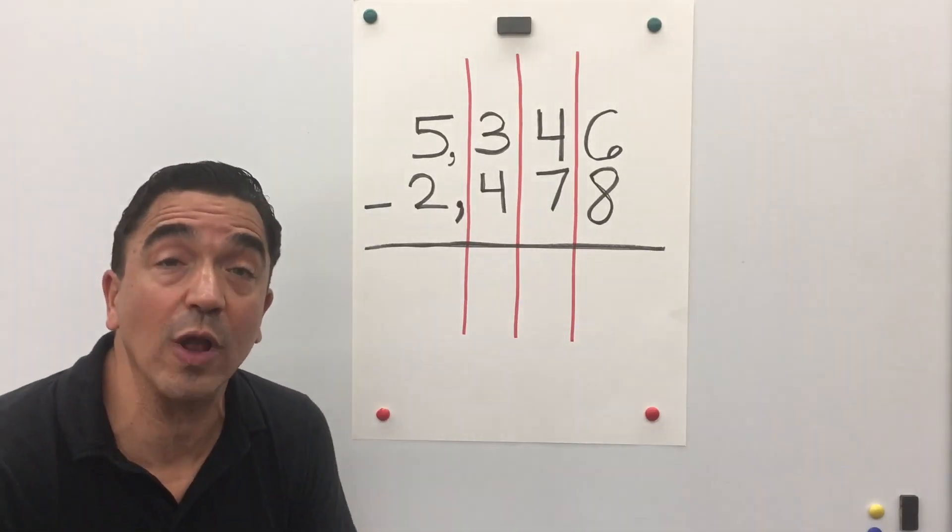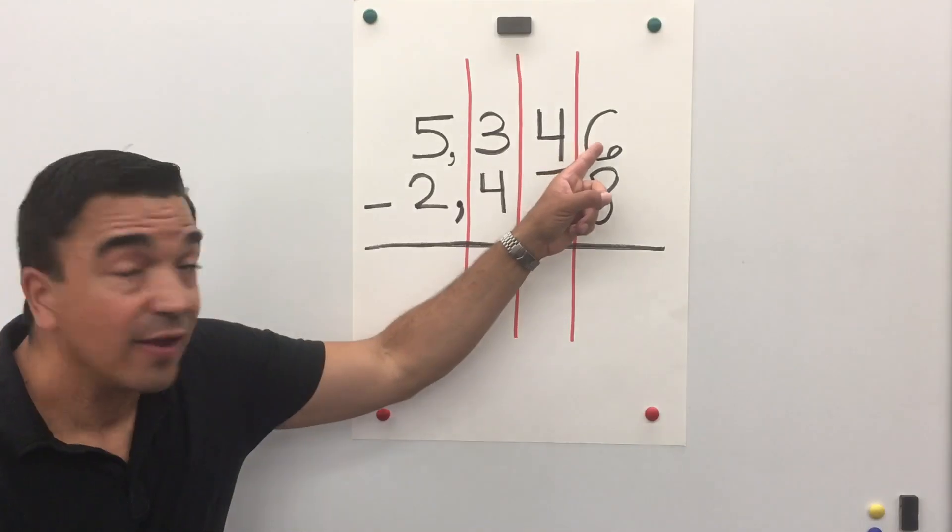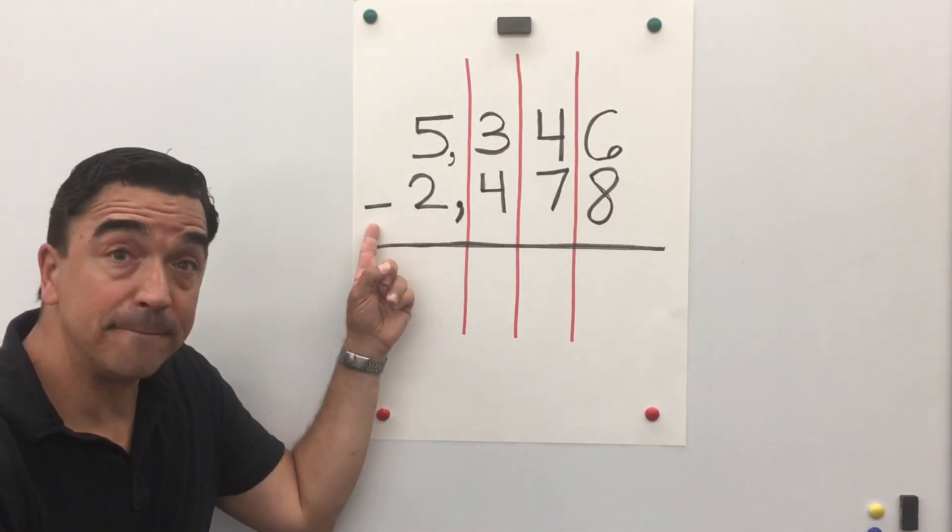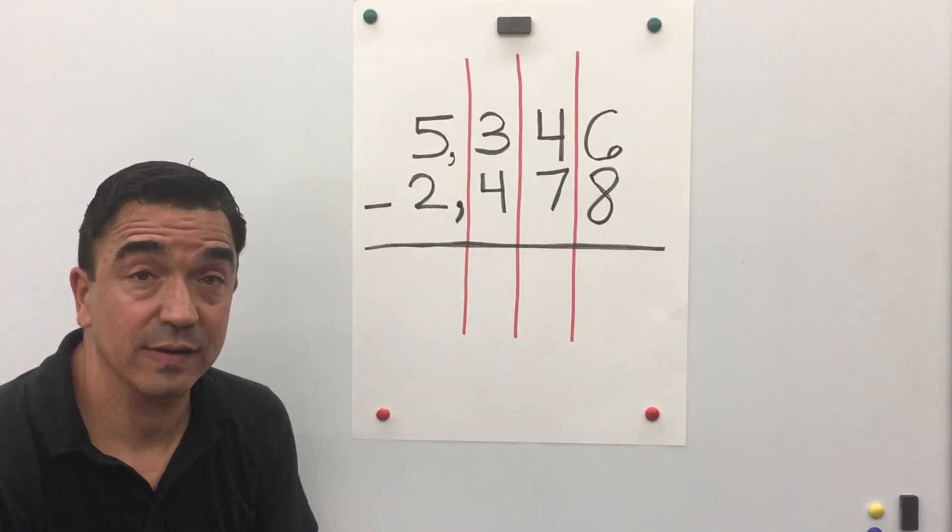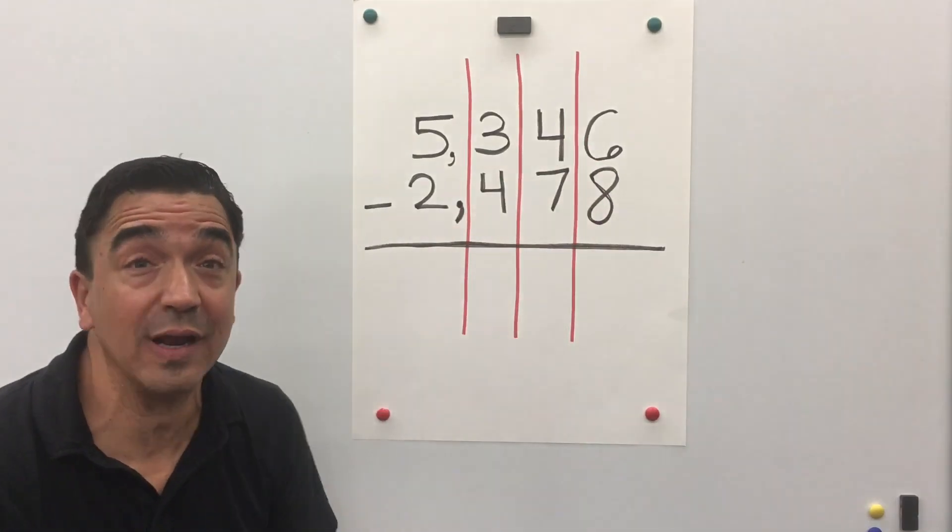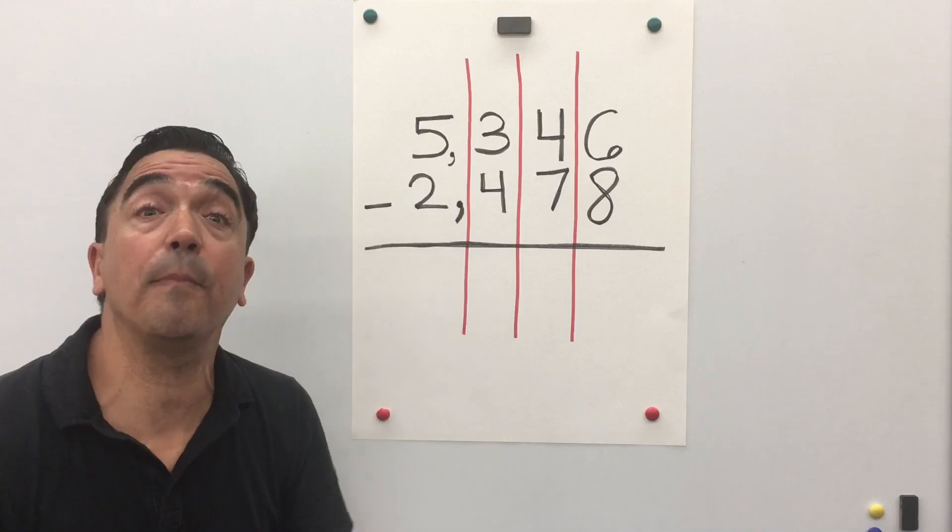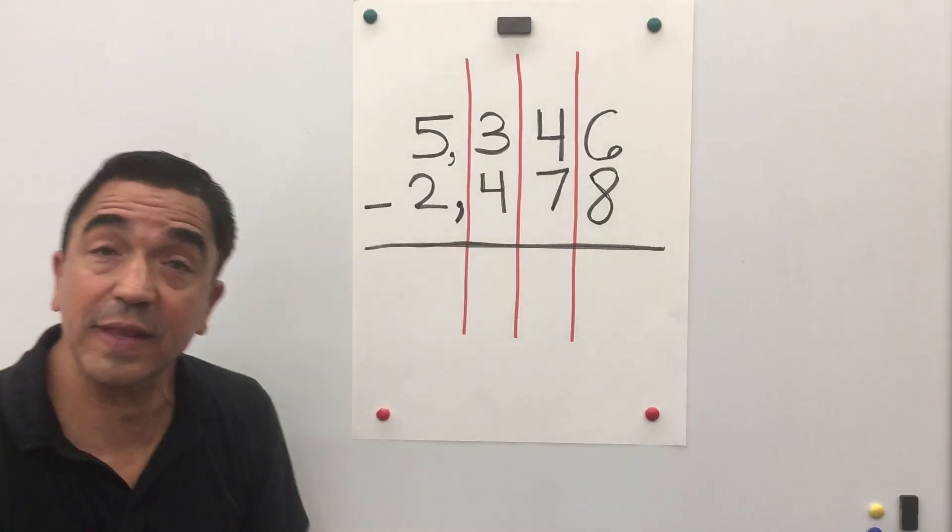We're gonna start in the ones place. 6 minus 8. We can't do that because the top number needs to be bigger than the bottom number. So we're gonna borrow from the tens place.